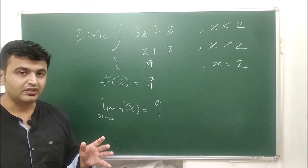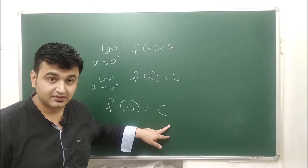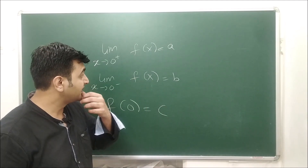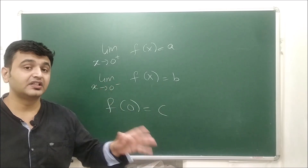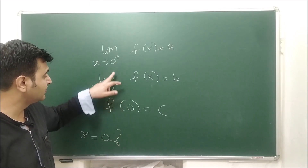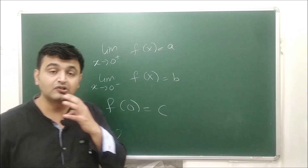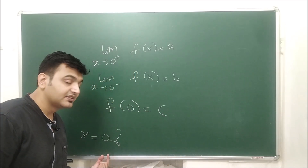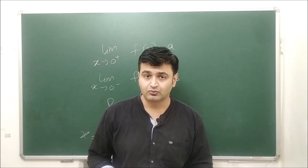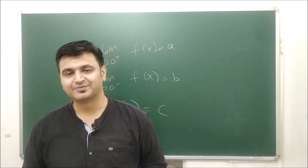Here is a homework question: suppose you have a piecewise function where the right-hand limit is A, the left-hand limit is B, and the actual value is C, where A, B, C are finite real numbers. What should be the condition on A, B, and C so that the function is continuous at zero? Please comment your answer in the comment section. If you have any other doubts regarding continuity, also ask in the comments. If you liked this lecture, please like, share, and subscribe. Thank you.